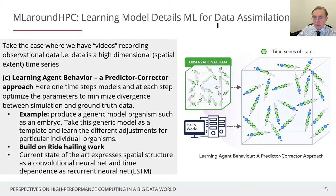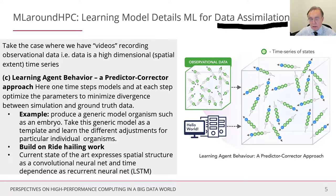The next example is also very exciting: data assimilation. That's a well-established process where you use the data to correct the simulation. It's well known for, say, weather forecasting, where radar data or other observations are fed into the simulation and it effectively corrects for unknown science or incorrect initial conditions, producing far more reliable simulations.